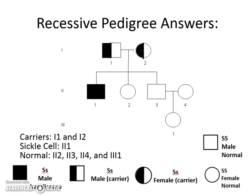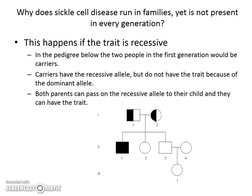Going back to sickle cell: individual II-1 is a boy, and he has a sister and a brother who are all blood-related to him. Notice the sister and brother are completely unshaded, meaning they received the healthy unshaded allele from dad and from mom — that means they are homozygous dominant, do not have any trait at all, and are not carriers. This answers how a trait can run in families but not show up in every generation: because it's recessive. Please be able to identify pedigrees and tell whether it's a recessive or dominant pedigree.